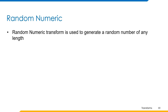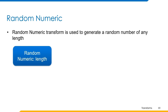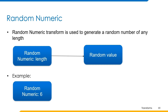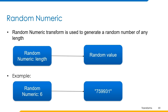Random numeric transform is used to generate a random string of any length consisting of only numbers. It takes length as input. If the length attribute is not specified, it takes 10 characters by default, and the maximum limit is 450 characters. For example, for a random numeric string of length 6, we pass length 6 as input and a random numeric value is generated.